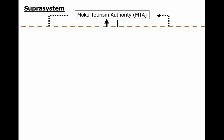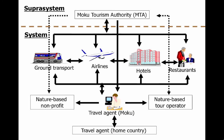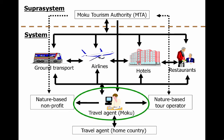The super system will also impact all of this. The travel agent in the home country works with the travel agent on Moku, who also works with the nature-based non-profits and tour operators. This is a good example of looking at your system to see where you might place impact if you're helping to save the environment — working with ground transportation, airlines, hotels, and restaurants to distribute information on the safe use of the environment for hikers, boaters, people who interact with sea life, and other important areas.